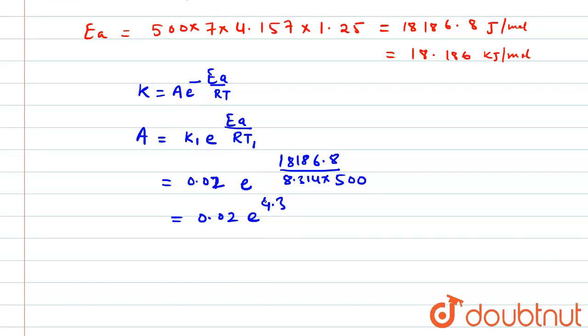Now we have to find the value of e to the power 4.3. So e to the power 4.3 is equal to approximately 73.6. So multiply this value 0.02 times 73.6.